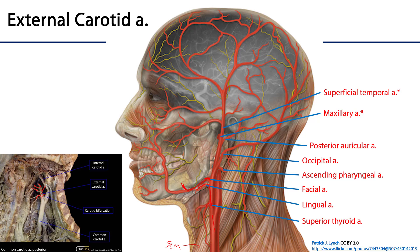We also have the ascending pharyngeal artery, which supplies the pharynx with blood — in particular the middle and inferior pharyngeal constrictors and stylopharyngeus. Then we have another posteriorly oriented branch, the occipital artery, which supplies the posterior aspect of the scalp with blood. It also sends some branches to the sternocleidomastoid and can supply parts of the posterior-most suprahyoid muscles.